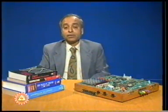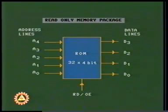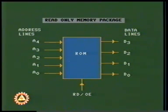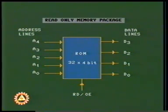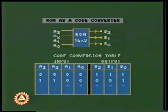Let us understand the input-output behavior of a typical random access memory. This figure shows a package of read-only memory with random access provision. The four data lines indicate that each register is four bits wide. With five address lines A0 to A4, any of the 32 registers can be accessed. The output-enable or read-control line may be used for timing and control of output data. A read-only memory can also be used as a code converter: the input code is applied to the address lines and the output appears on the data lines.